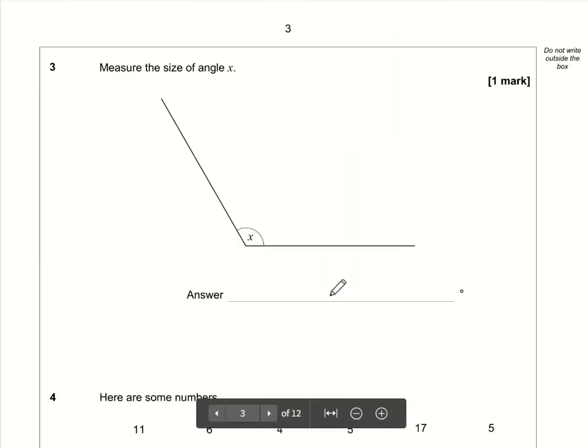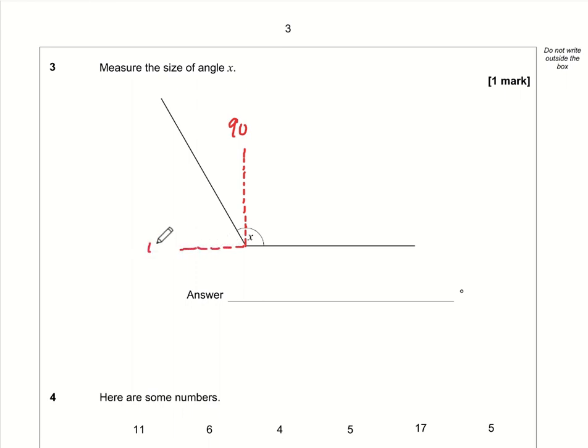Question 3: This is hard to demonstrate on screen, but you need to use a protractor. This is an obtuse angle between 90 and 180 degrees. If you measure it, it should be 120 degrees, although any angle between 118 and 122 degrees is accepted.